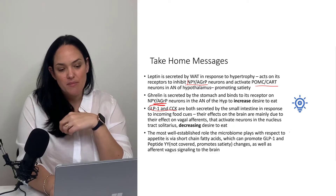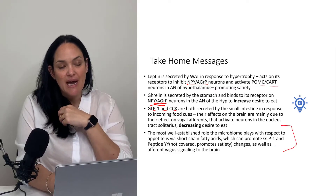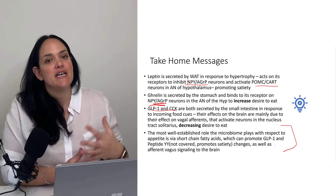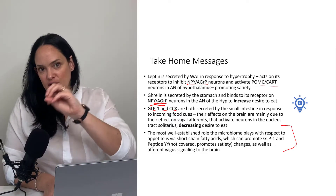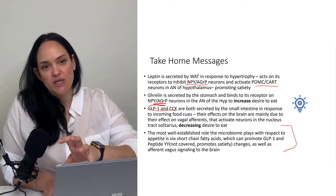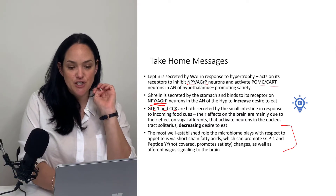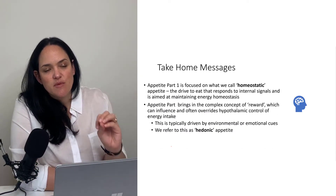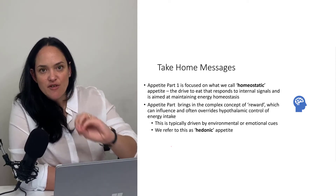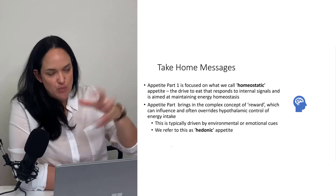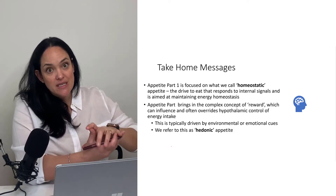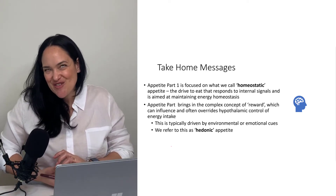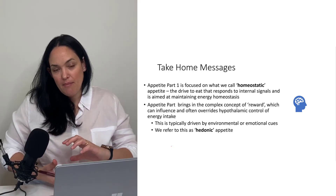As far as the microbiome, the best-established role it plays via appetite is through its metabolites — these short-chain fatty acids interacting with intestinal cells and affecting those cells' ability to secrete satiety factors like GLP-1 and peptide YY. So far, all of this has been focused on homeostatic appetite: us sensing and responding to long-term signals like the expansion of adipose tissue, or short-term signals like what's going on in our digestive tract and microbiome.